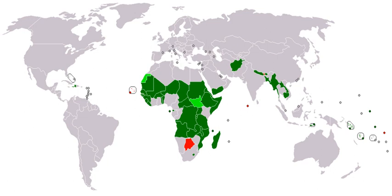This highlights that the standard of living across the entire developing world varies greatly. Other terms sometimes used are less developed countries, underdeveloped nations, and non-industrialized nations. Conversely, developed countries, most economically developed countries, and industrialized nations are the opposite end of the spectrum.